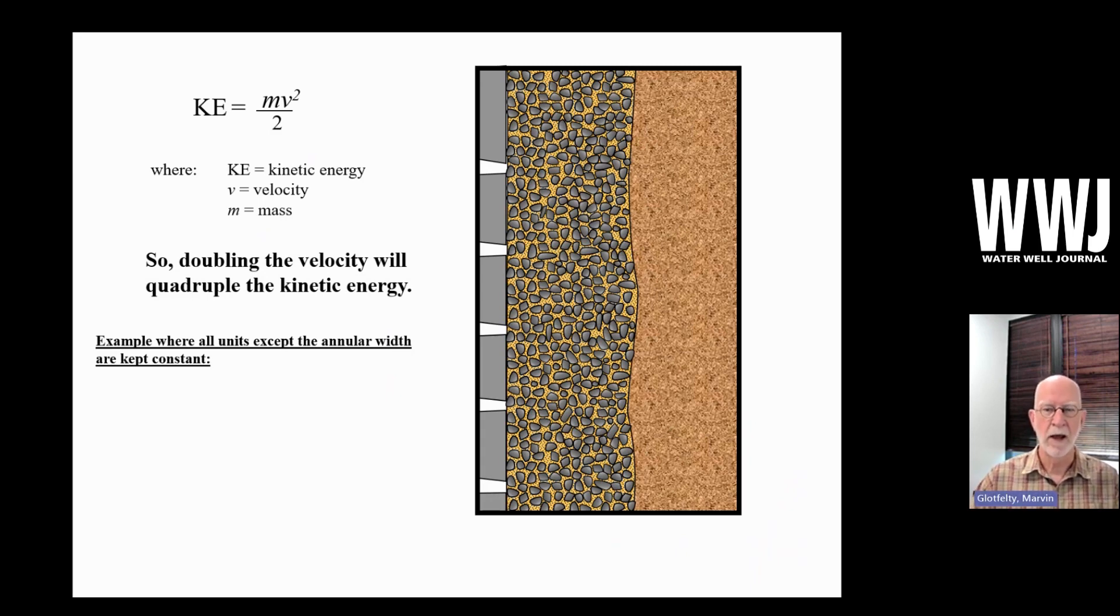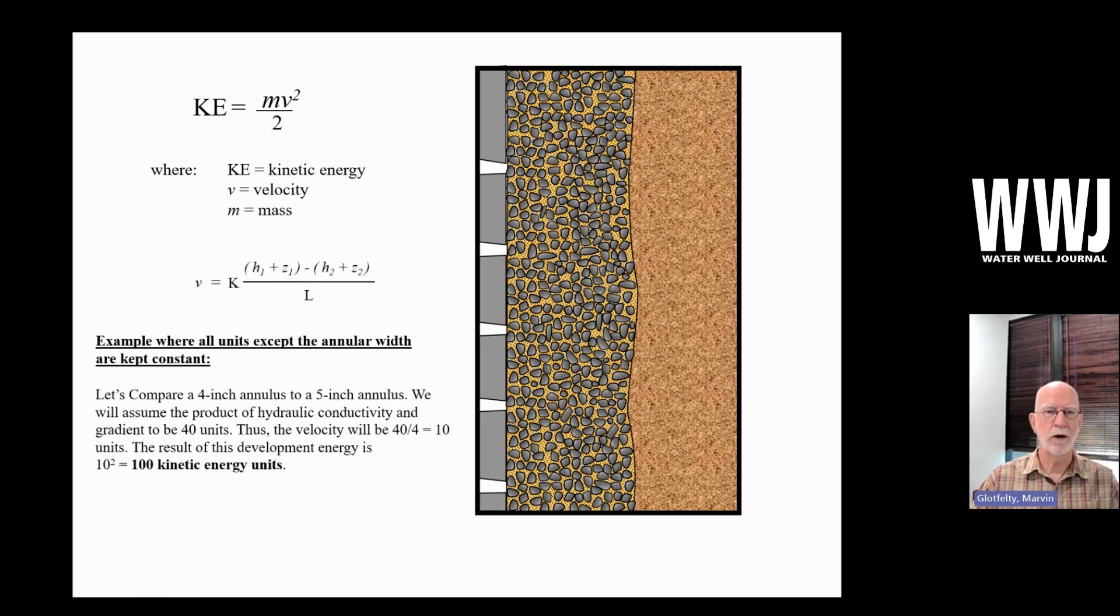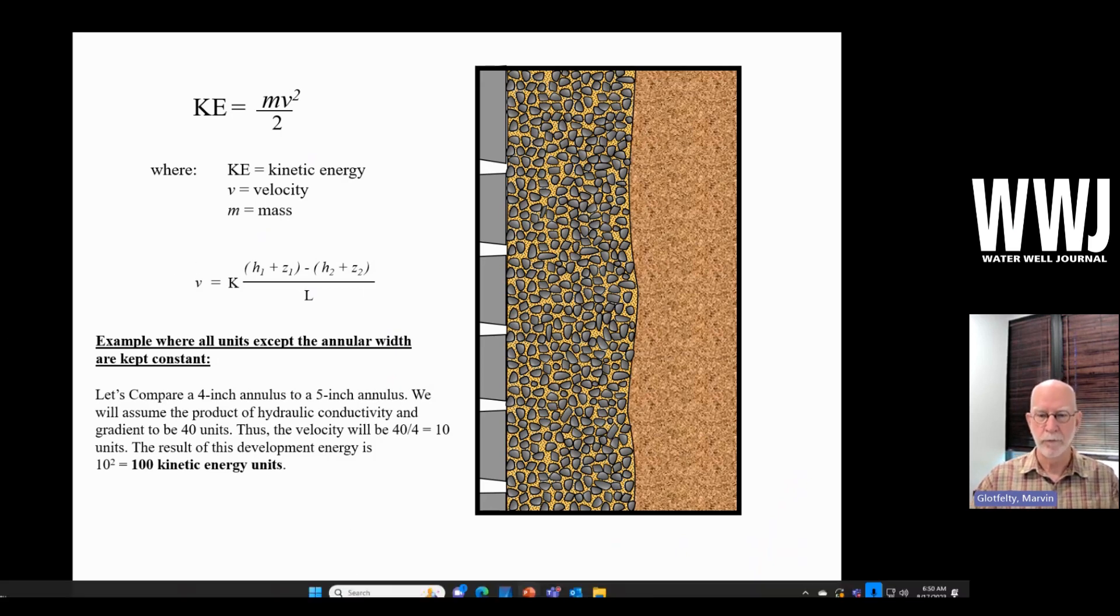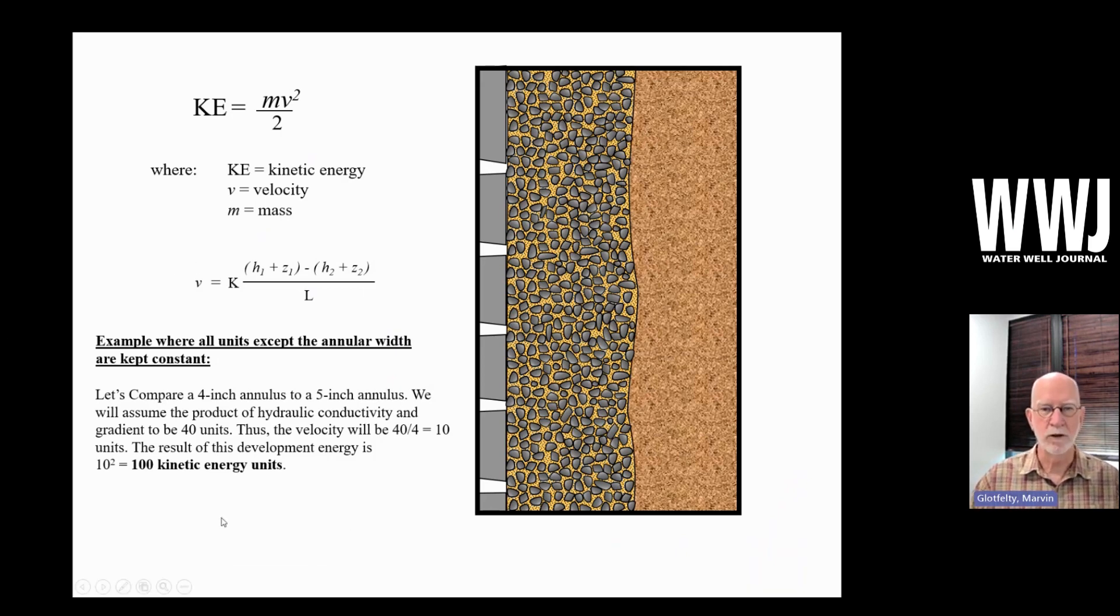So let's look at an example. We're going to look at the mathematical formula that I showed earlier, which is the Darcy velocity here. But we will keep everything equal. So one thing we're worrying about is a four inch versus five inch annulus. So only L will change.